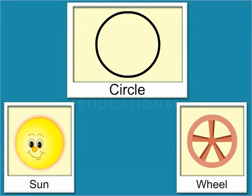For example, the sun and the wheel are circular in shape. They look like a circle.